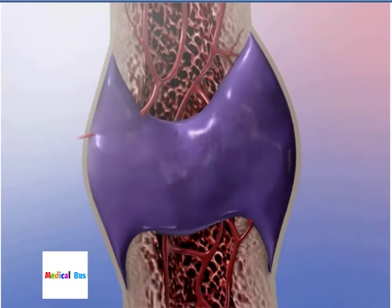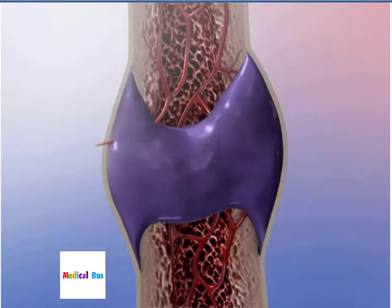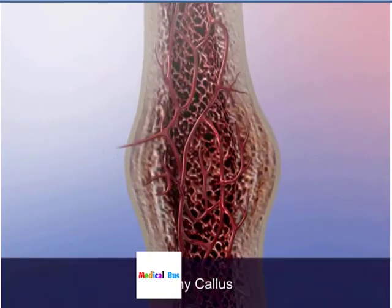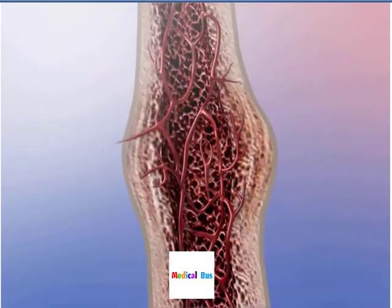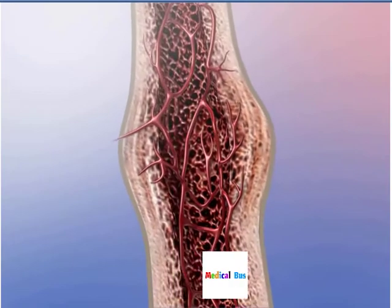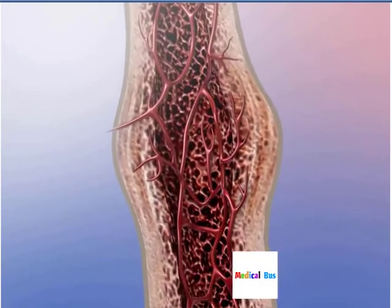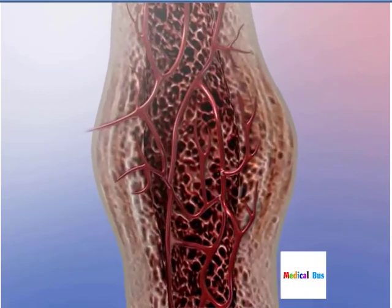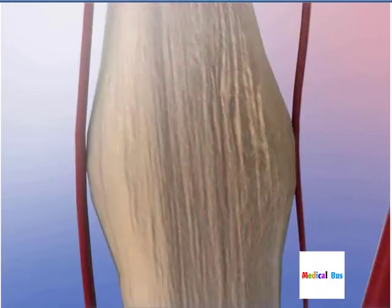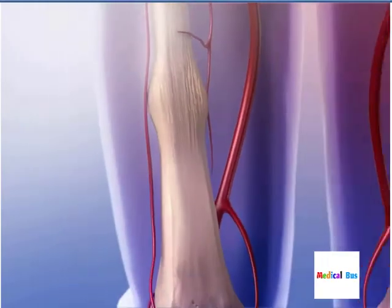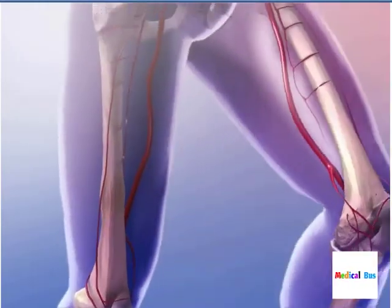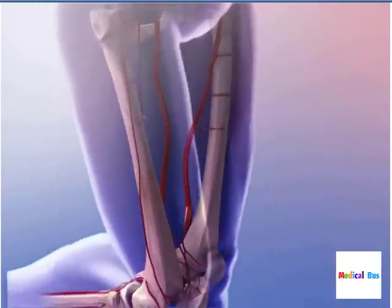Over many weeks, osteoblasts transform the callus into bone. Continued remodeling and the mechanical stress put on the bone creates and shapes new bone. Over a period of months or years, the bone regains its original strength, shape and internal structure.